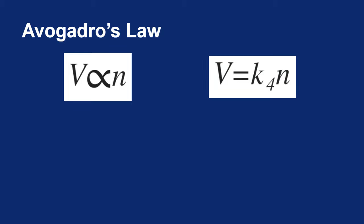We said that volume is proportional to the number of moles. And if we get rid of that proportionality symbol, we have to introduce a constant. So I'll say volume equals a constant times the number of moles. Remember, n refers to the number of moles.